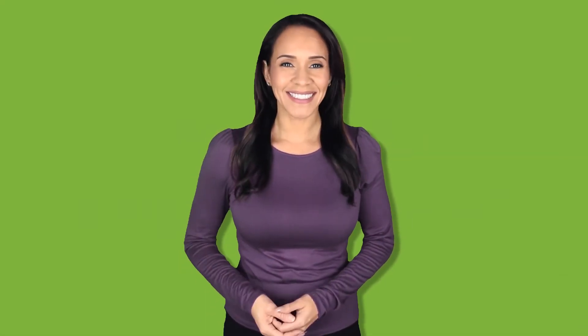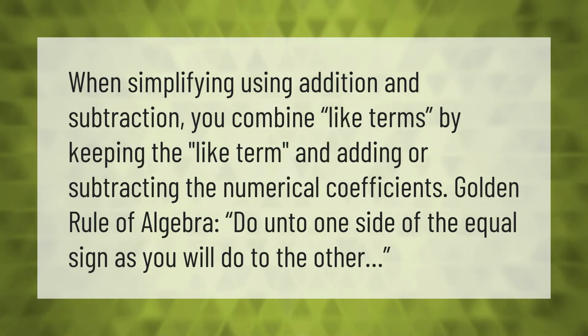When simplifying using addition and subtraction, you combine like terms by keeping the like term and adding or subtracting the numerical coefficients. Golden Rule of Algebra: Do unto one side of the equal sign as you will do to the other.